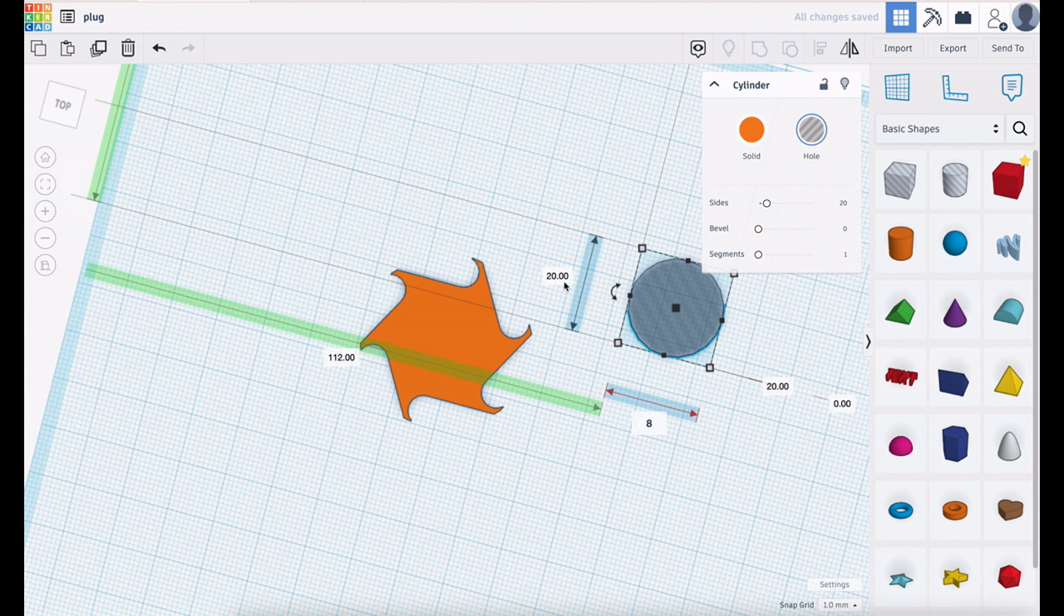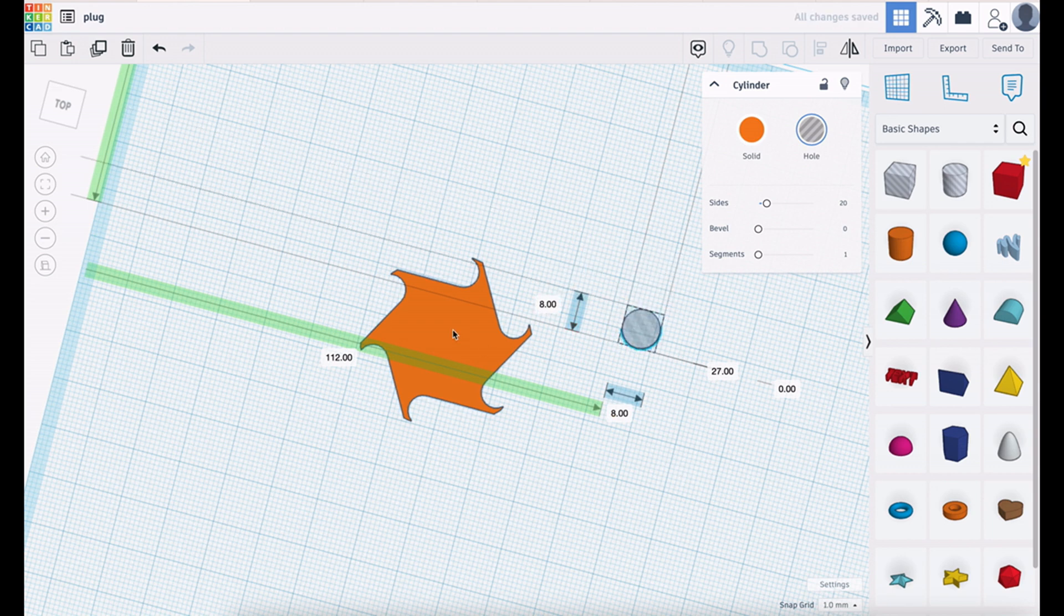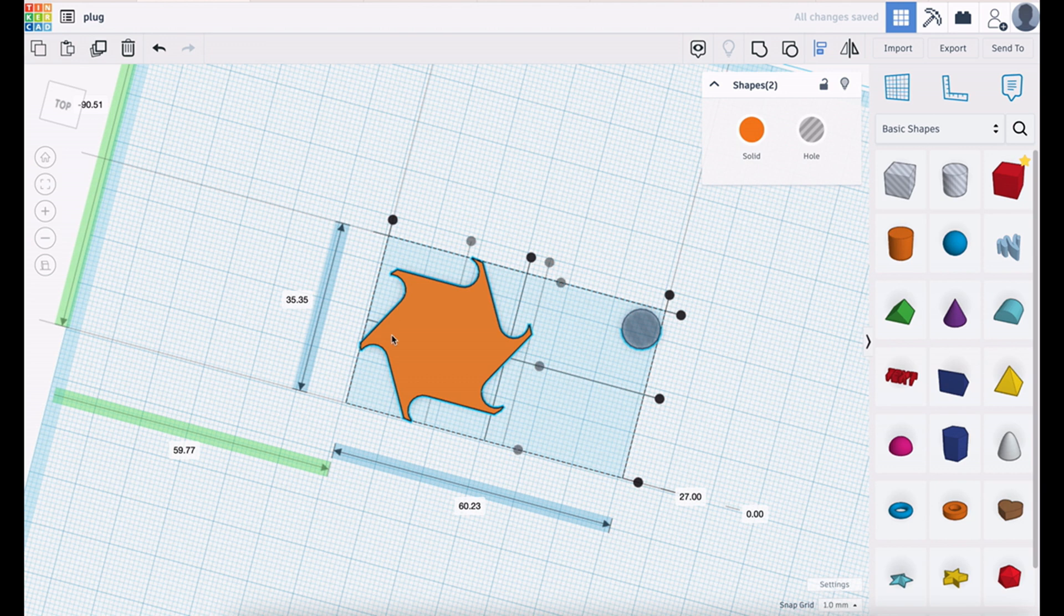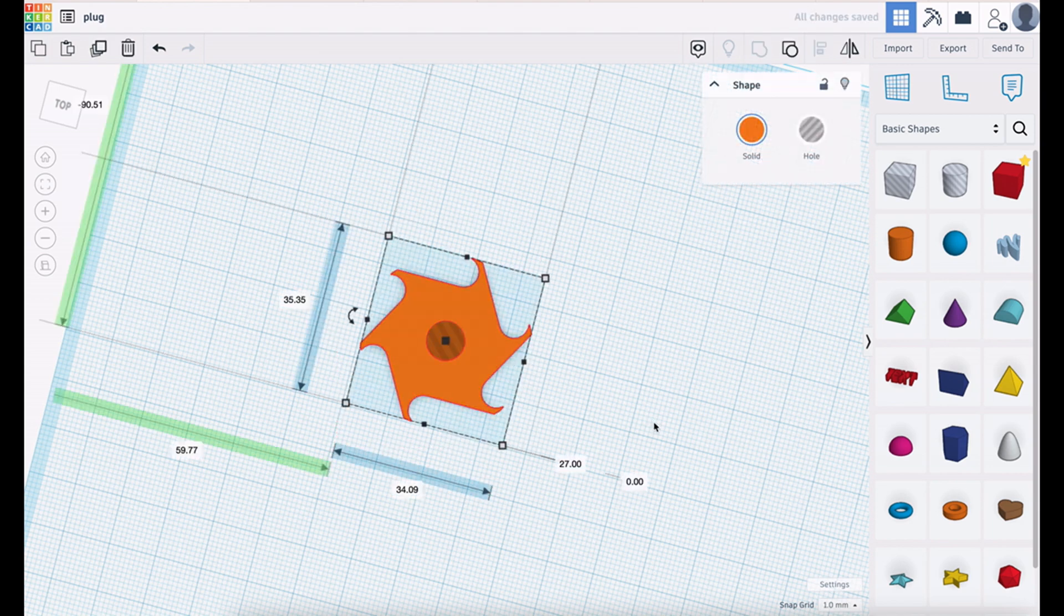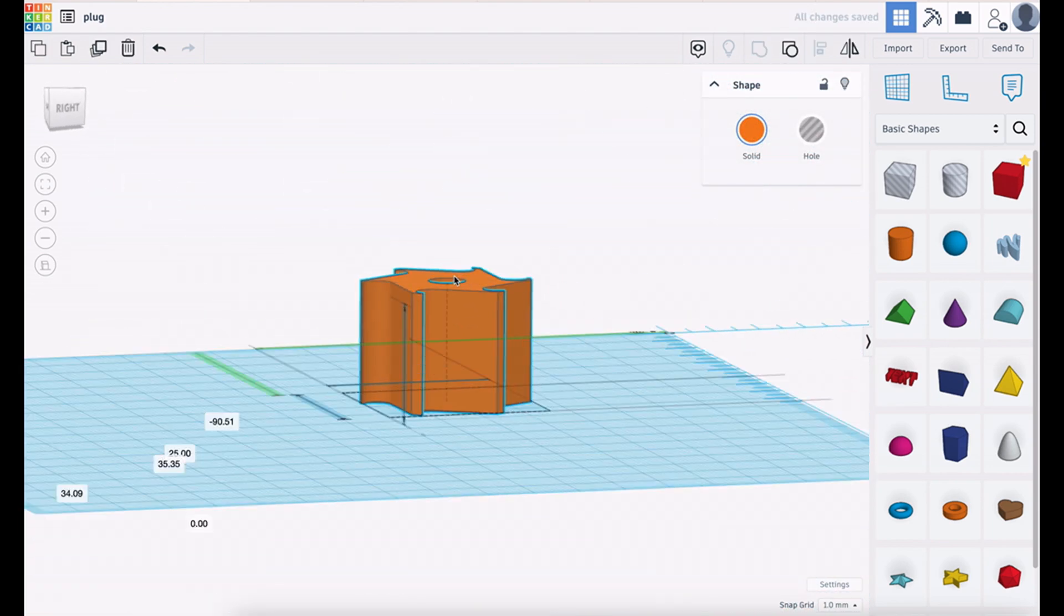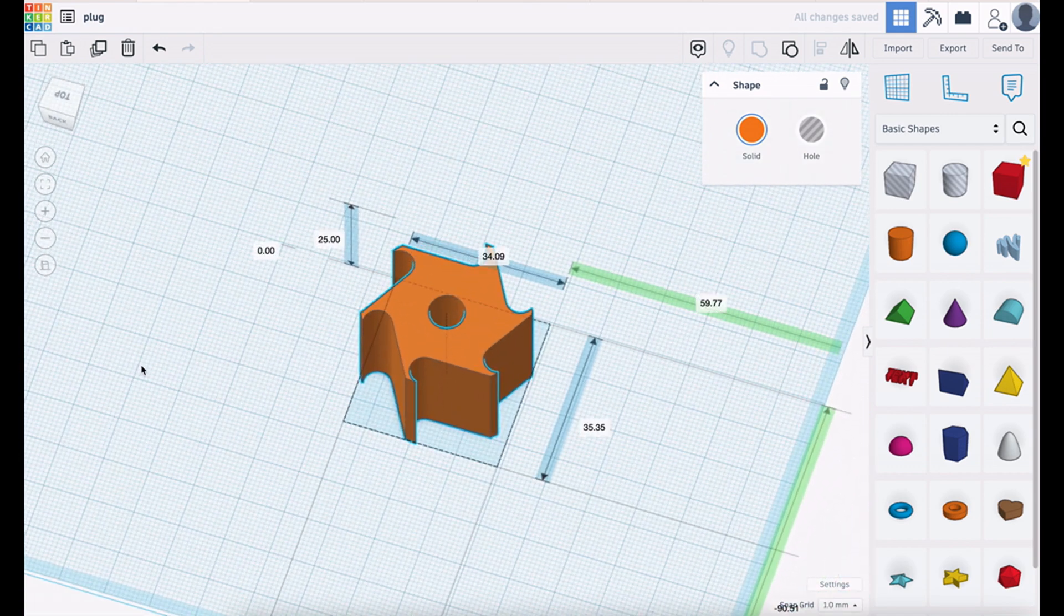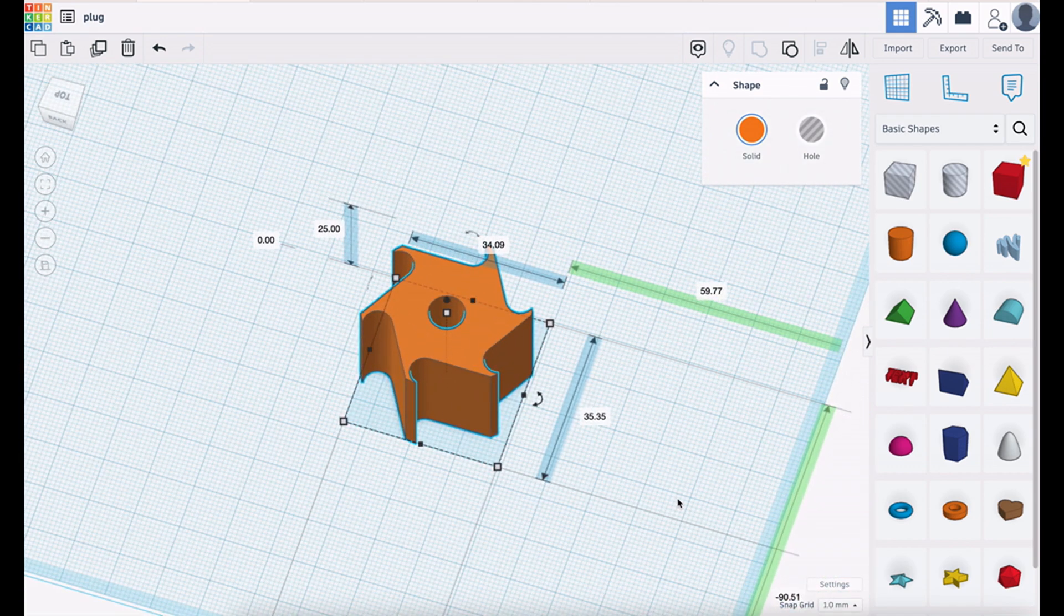Of course what we want is a hole in the centre because we need to put the bar through there. Let's make that an 8mm hole. Centre it. Do that. And then group it. There you go. So there it is. Put together with our ring. And of course we've got our one way bearing.